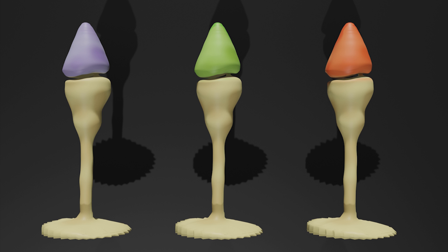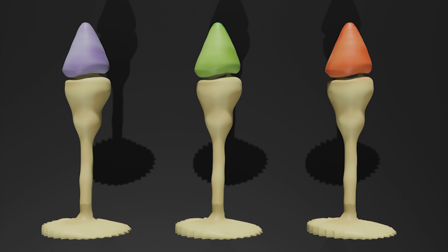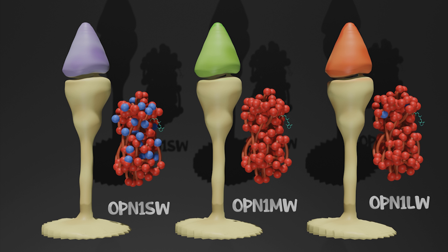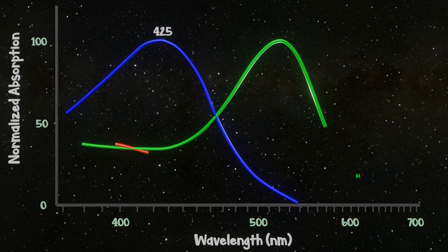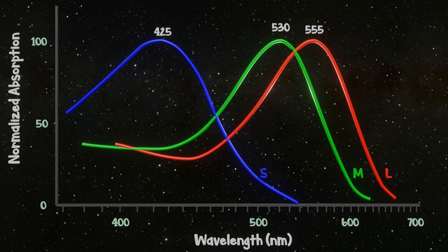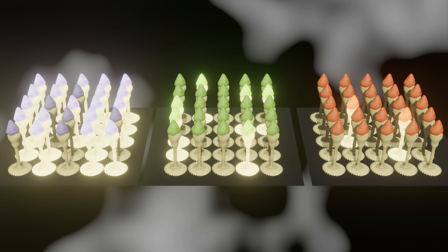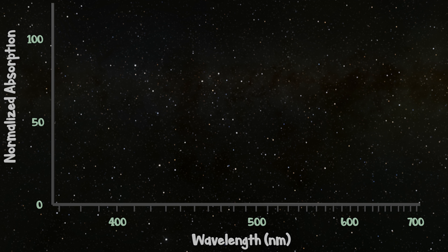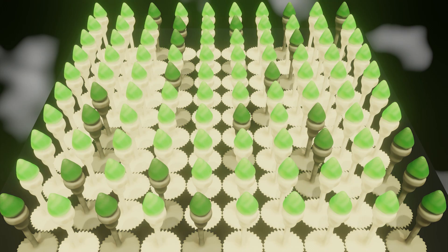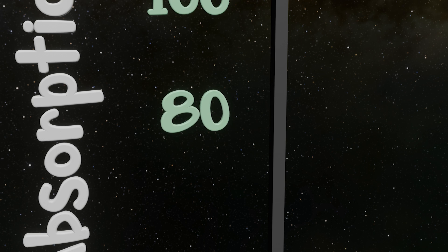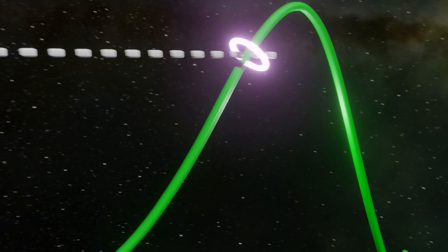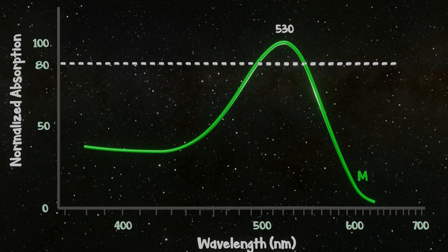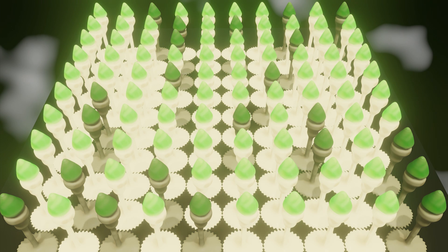So our cones, the photoreceptors that detect what we perceive as color, each have a unique opsin protein which causes absorption of a specific wavelength of light. Our brain then compares how many of each cone are activated to determine what kind of light is entering our eye. If there was just one cone, let's pretend just the green one, then if we imagine 80% of our green cones were activated, that could mean three things: either the light is a slightly higher or lower frequency than green light, or it's a perfectly green light but at low intensity.